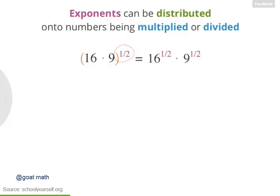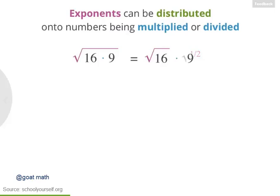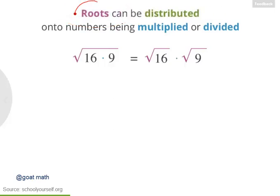And if we rewrite all the 1 half powers as square roots, this equation says that the square root of 16 times 9 equals the square root of 16 times the square root of 9. So not only can you distribute exponents onto numbers being multiplied or divided, but you can also distribute roots, because roots are really fractional exponents.